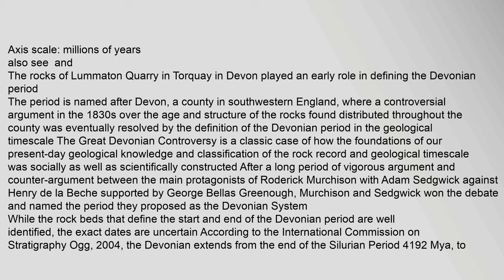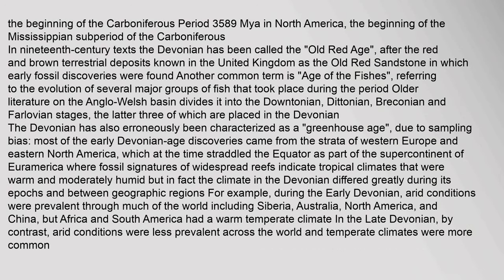While the rock beds that define the start and end of the Devonian Period are well identified, the exact dates are uncertain according to the International Commission on Stratigraphy (Aug. 2004). The Devonian extends from the end of the Silurian Period, 419.2 Maya, to the beginning of the Carboniferous Period, 358.9 Maya. In North America, this corresponds to the beginning of the Mississippian subperiod of the Carboniferous. The Devonian has been called the 'Old Red Age', after the red and brown terrestrial deposits known in the United Kingdom as the Old Red Sandstone, in which early fossil discoveries were found.